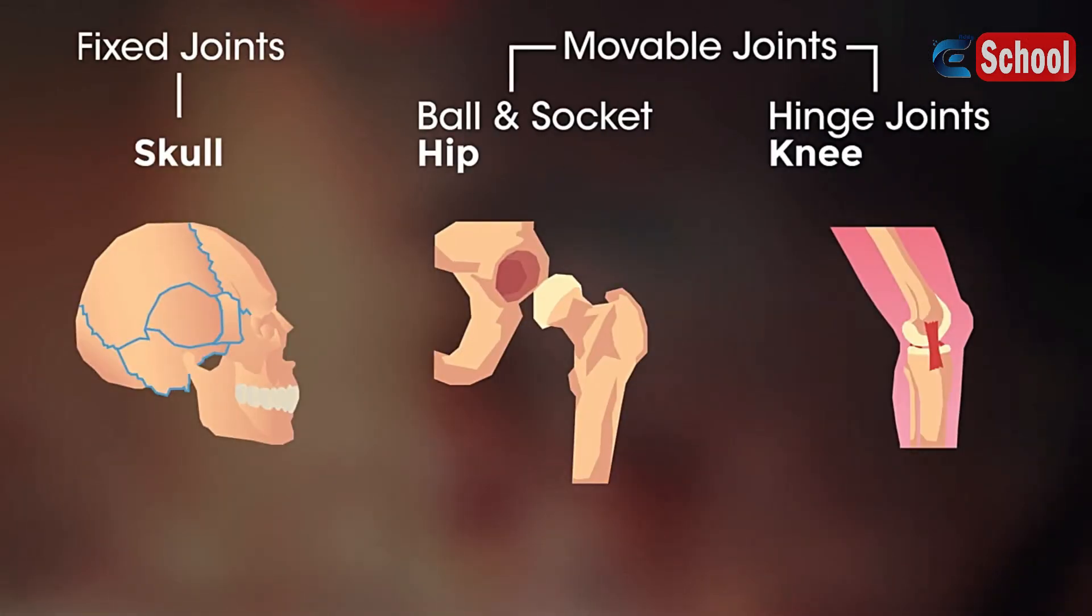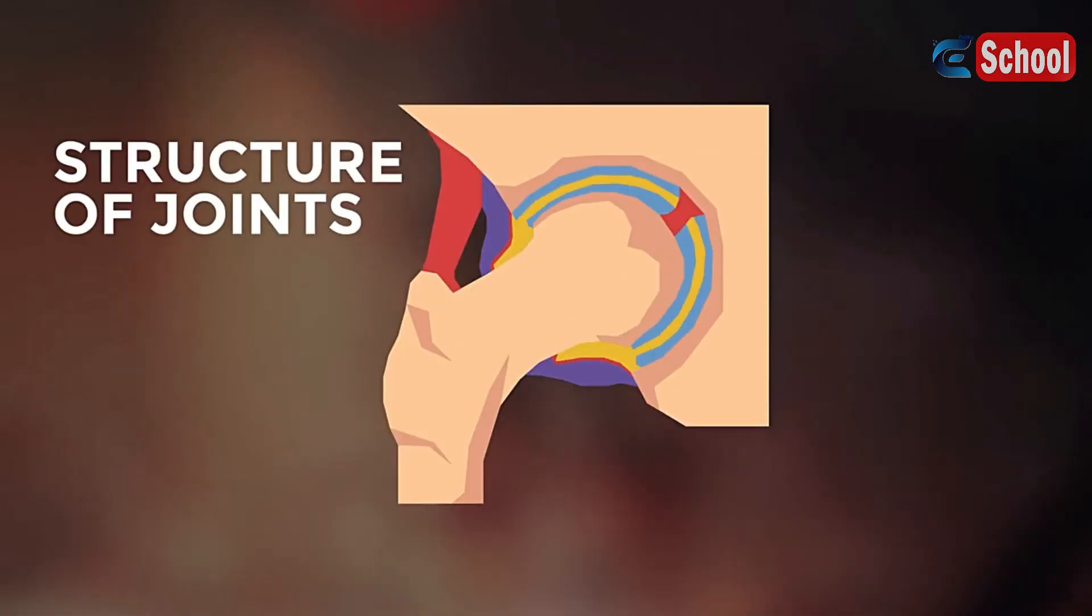So that's the three main types. Let's have a quick look at the structure of the joints and their functions.